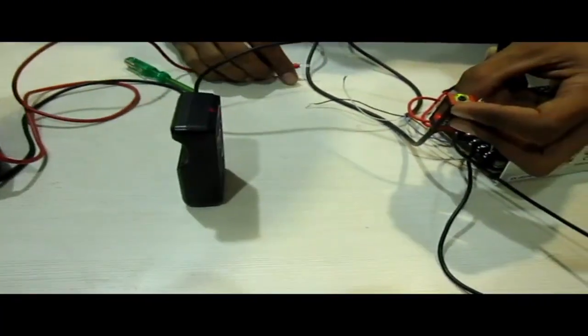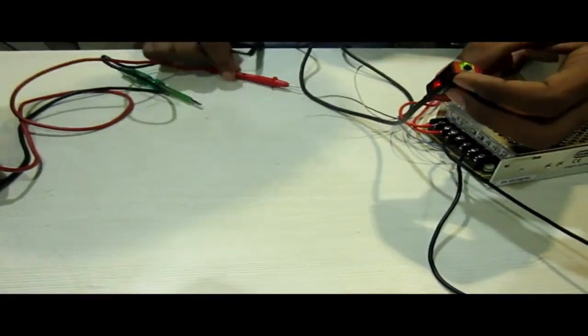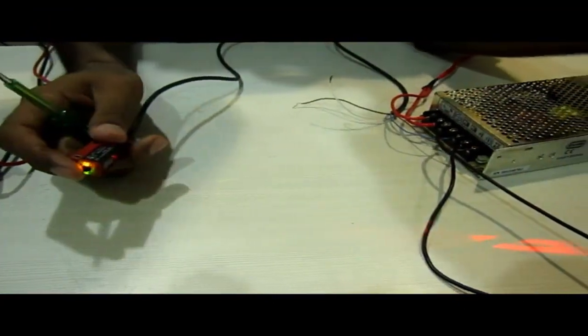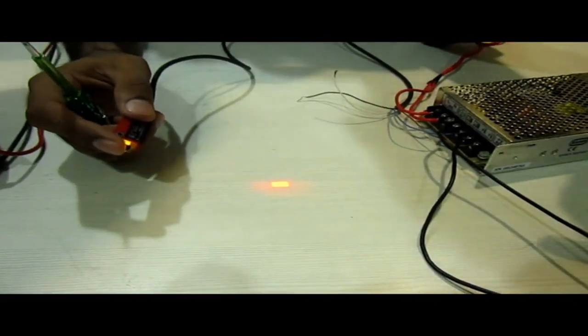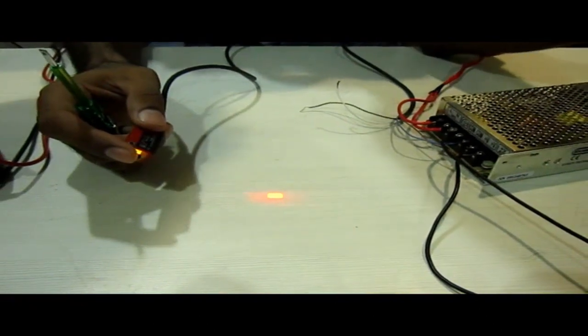We can use this voltage to actuate any actuator or we can use it in PLCs or in controllers to control the process or whatever applications we want. In next session I am going to connect this sensor to some indicators to indicate the object presence.